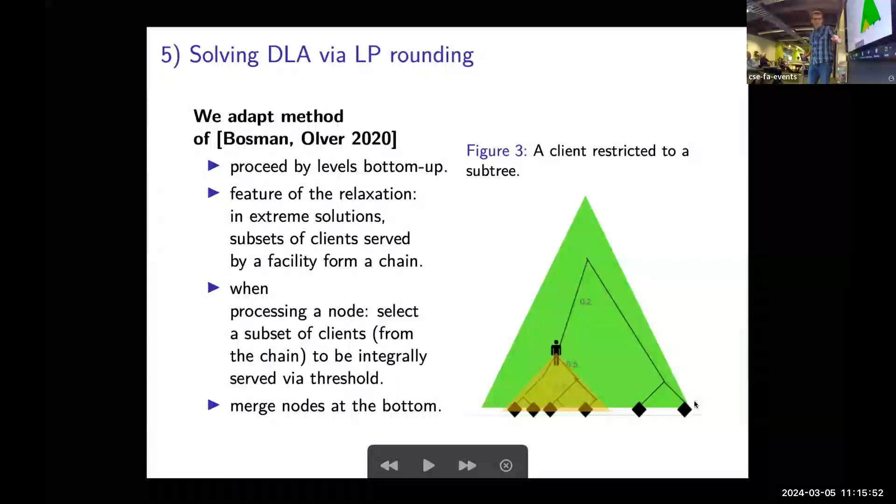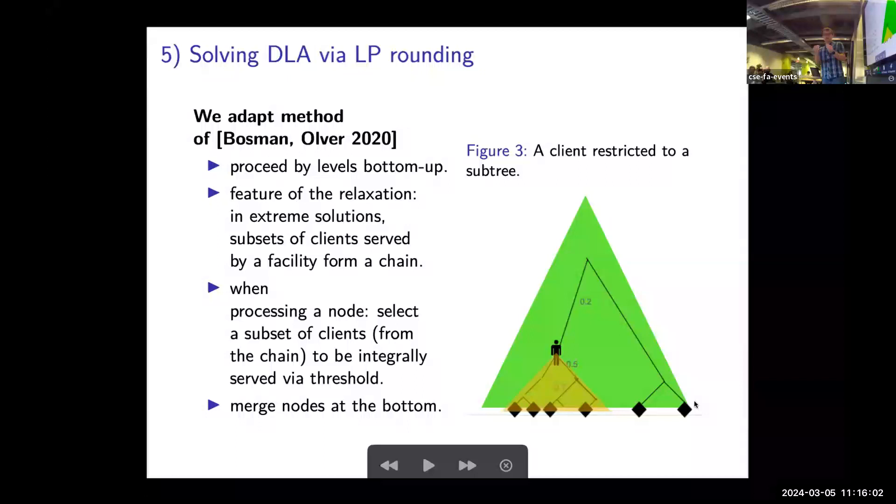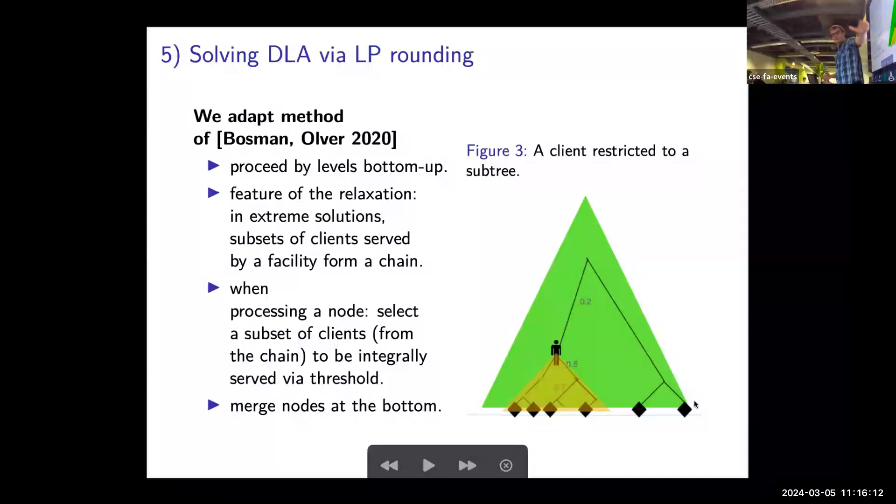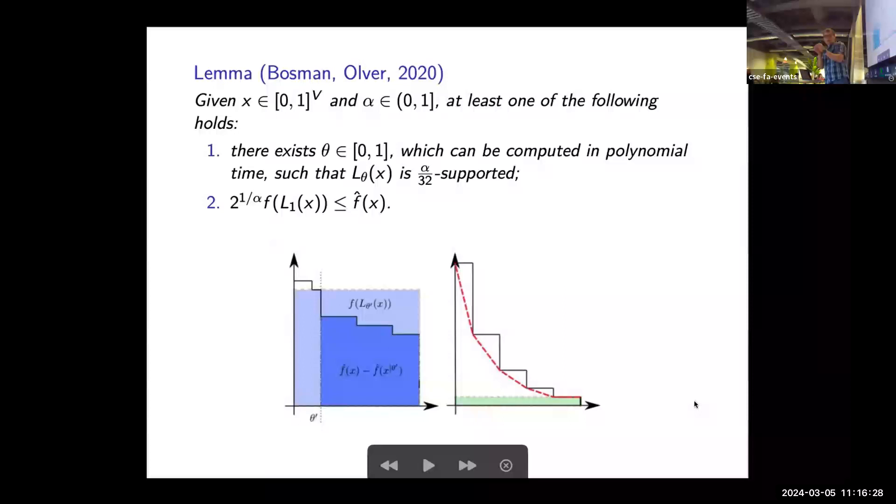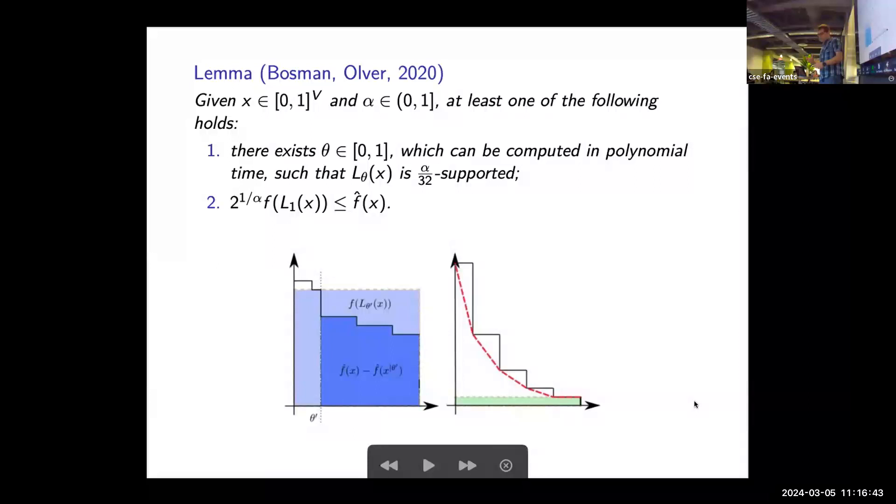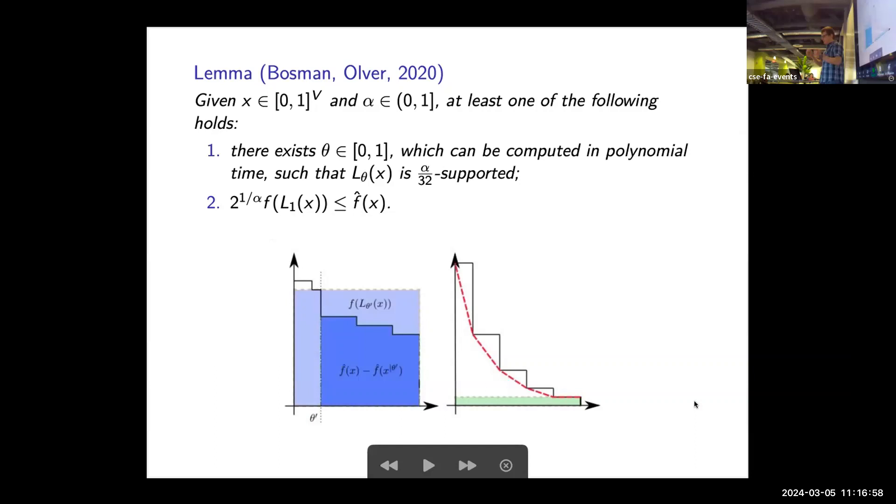So we will be thinking that the clients sit in the middle of trees and facilities are down there. We need to make a decision: should I serve this client from a particular facility down in the leaves? We will be making this decision going bottom up. So we focus on a single node of the tree and we will try to round the fractional solution that we currently have. When you look into this single node, the fractional solution gives you some distribution of a set of clients that are served in this node fractionally. But because it's a submodular function, these sets form a chain. So you can think of thresholding to find a right subset in the chain.